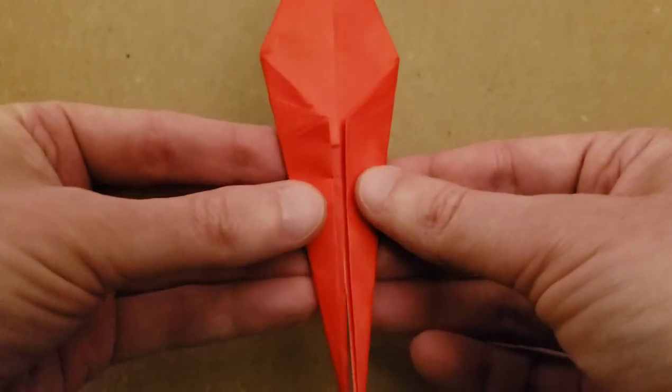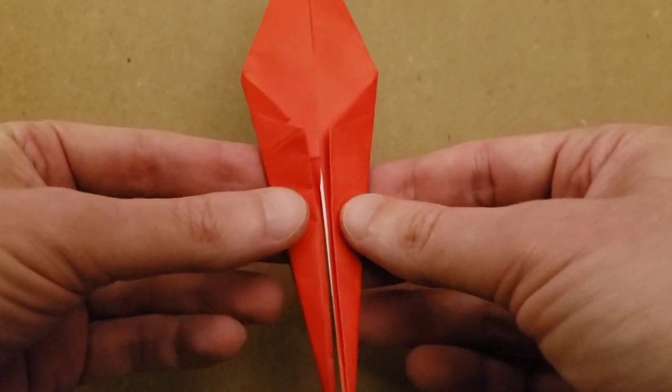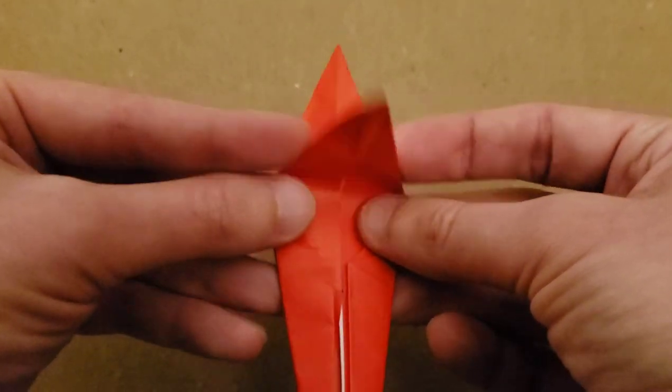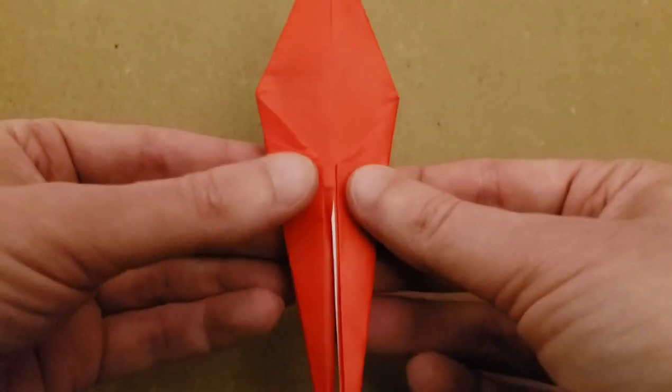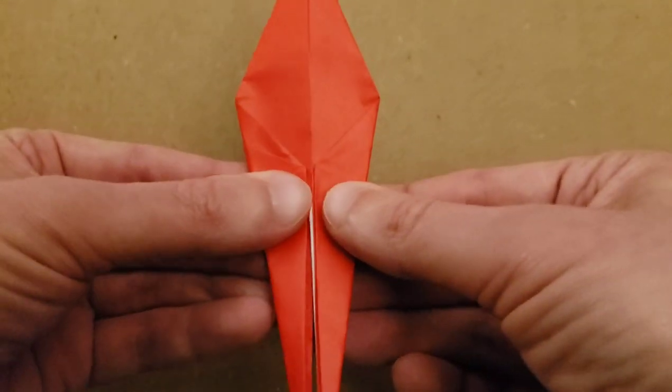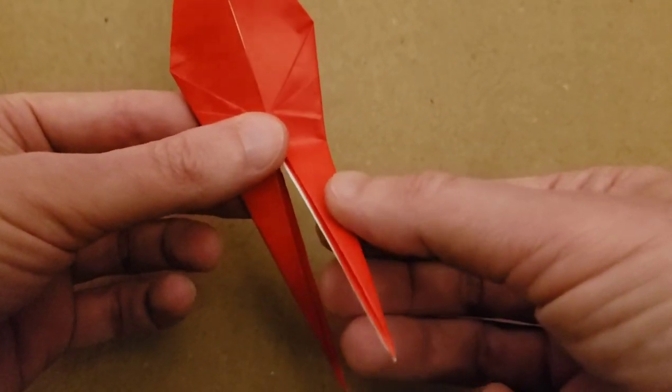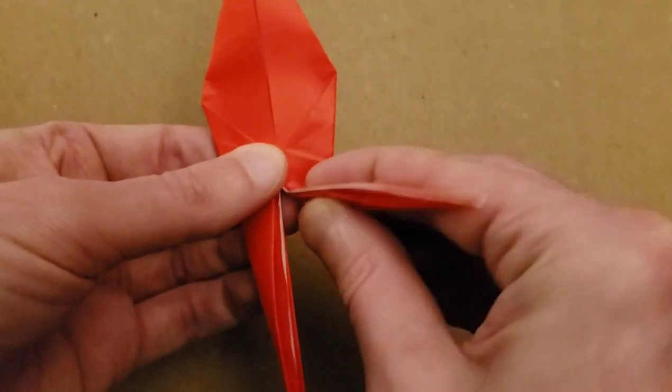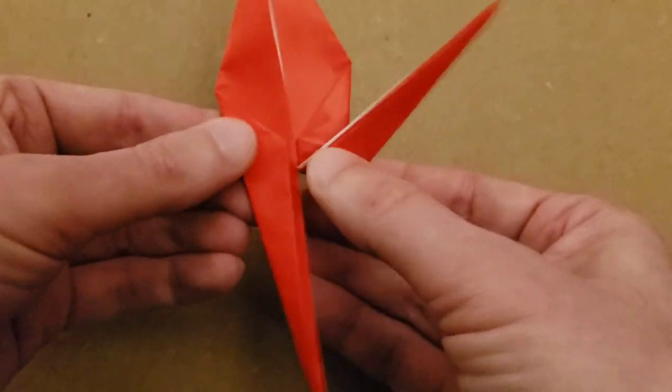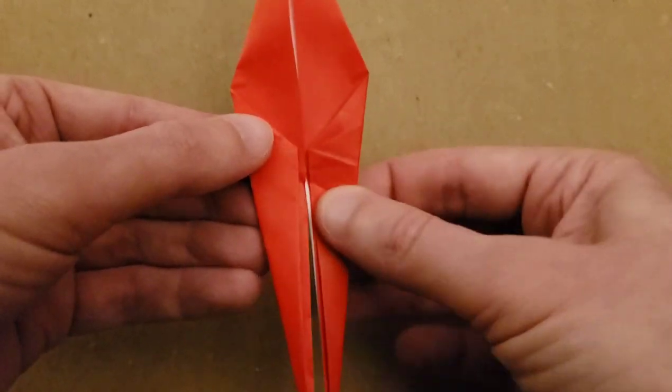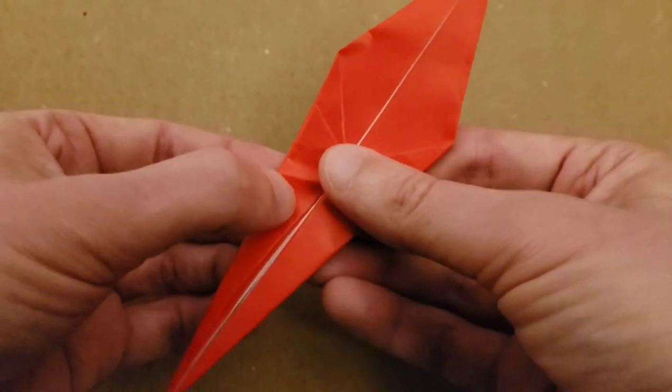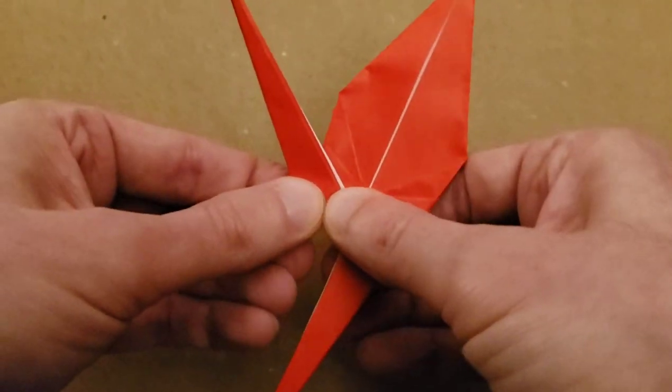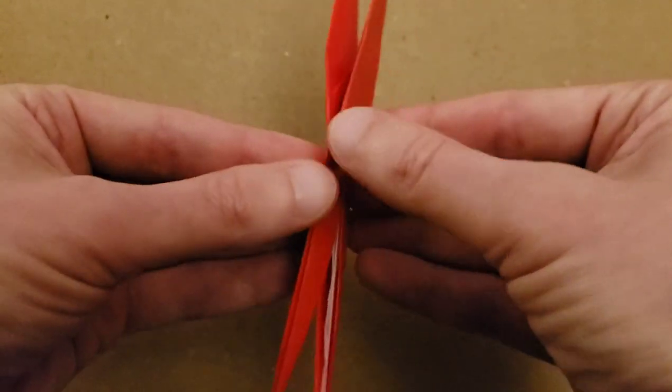So believe it or not, these two down here - one's going to be the tail, the other one's going to be the head and the neck. And then up here we have the wings. So now it really doesn't matter which is which, but I'm going to take one of our legs, if you will, and then fold it up. Like so. And then unfold it, turn it over and do the same fold. Doesn't have to be exact because you can adjust it later, and then unfold.